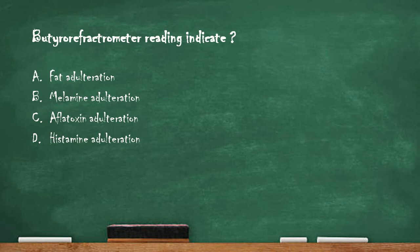Next question: what does a tyro refractometer reading indicate? Option A: fat adulteration. Option B: melamine adulteration. Option C: aflatoxin adulteration. Option D: histamine adulteration. The right answer is option A — fat adulteration. The tyro refractometer reading indicates fat adulteration.